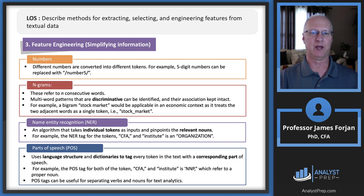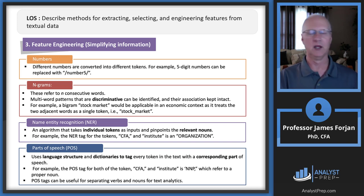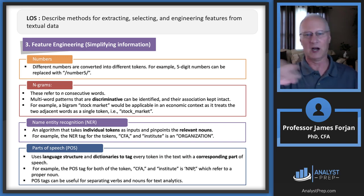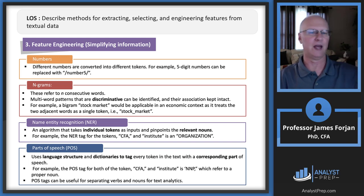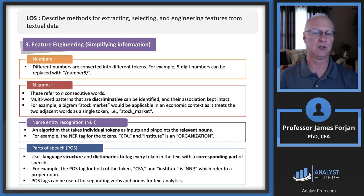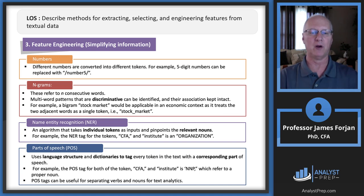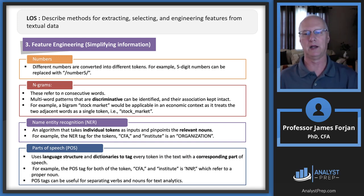When simplifying information, different numbers are converted into different tokens. We can replace a five-digit number with a token like 'number five.' N-grams allow us to discriminate: 'stock market' is a bigram — a single two-word token. Name entity recognition identifies proper names and terms like 'CFA' — and parts of speech tagging uses language structure and dictionaries to tag every part, ensuring that 'CFA Institute' is highlighted and emphasized together.